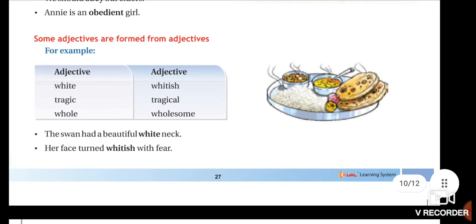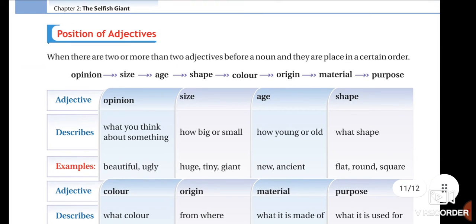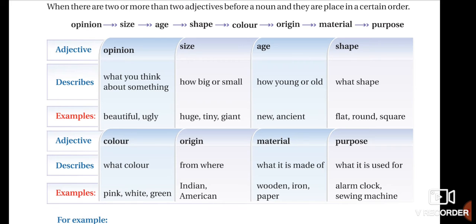Today we are going to learn the position of adjectives. Children, listen carefully — when there are two or more adjectives in a sentence before a noun, you have to place those adjectives in a certain order: opinion, size, age, shape, color, origin, material, and purpose. This is the order in which you should write adjectives in a sentence.